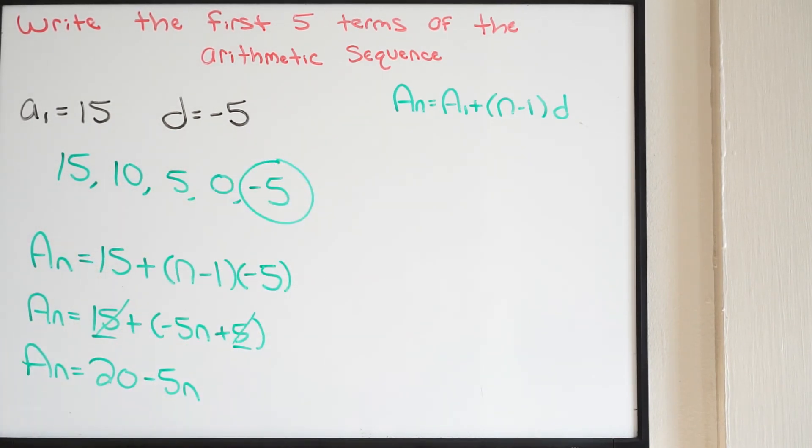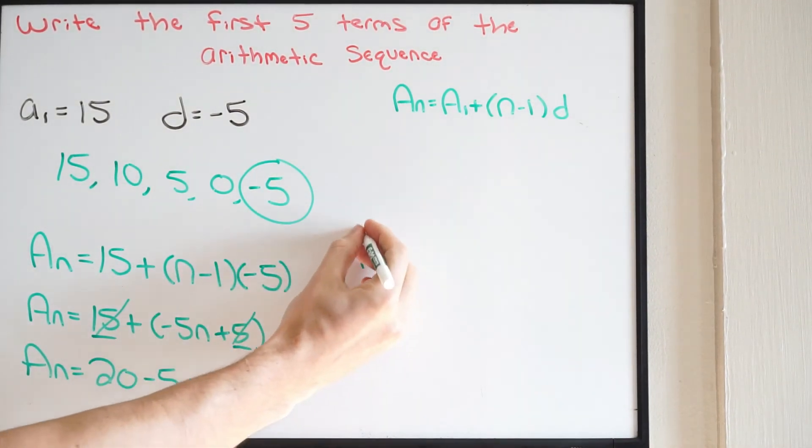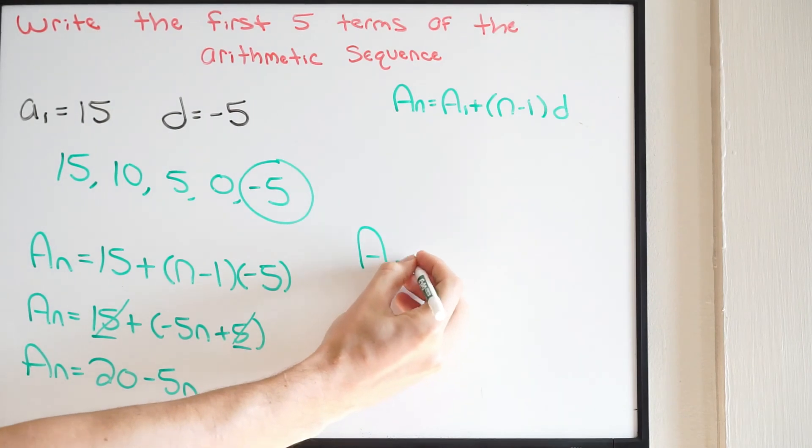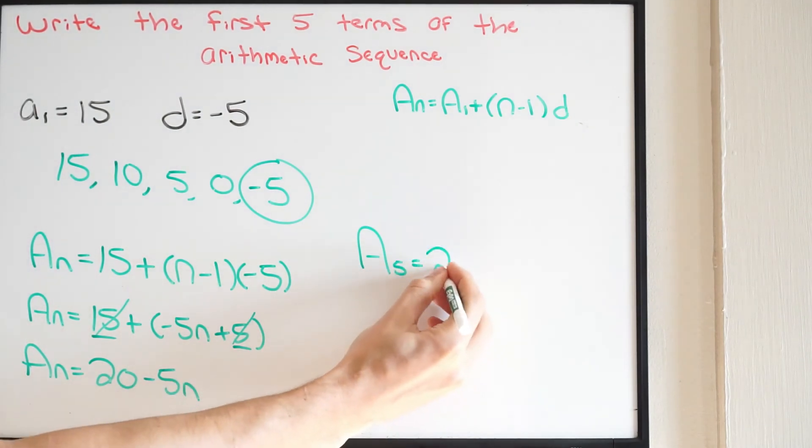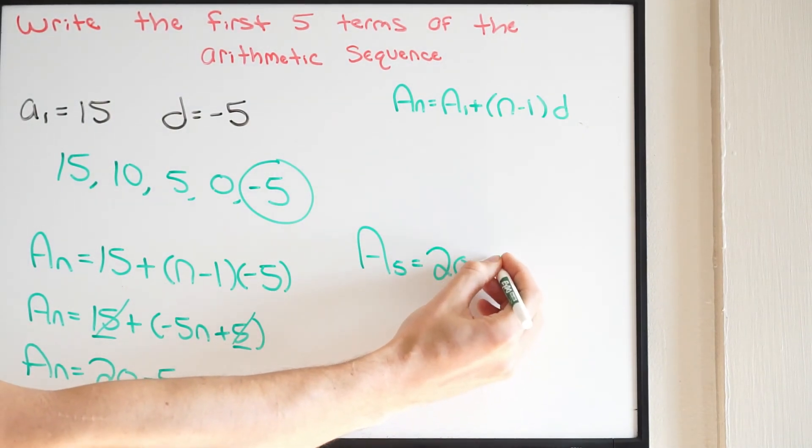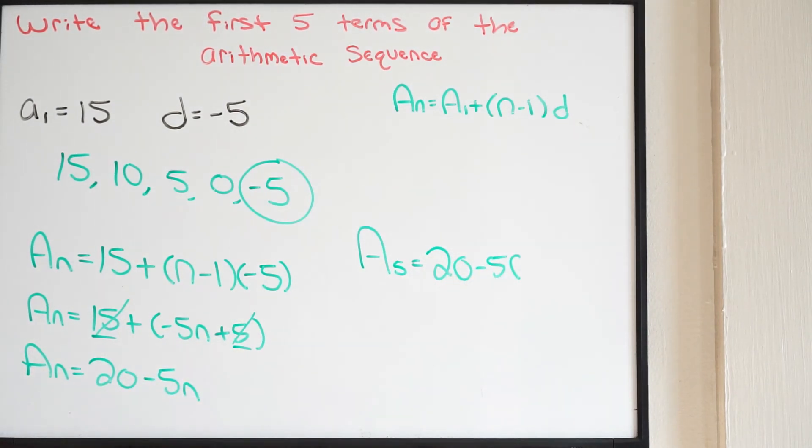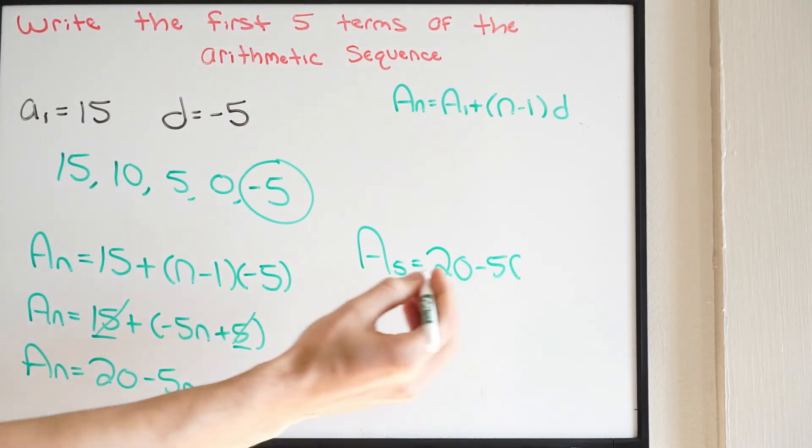So let's see how that works out using our equation. So I'm going to say here, A of 5, meaning I want to find the fifth term. So A of 5 equals 20 minus 5 times, I want to find the fifth term, so I'm plugging a 5 in for N.